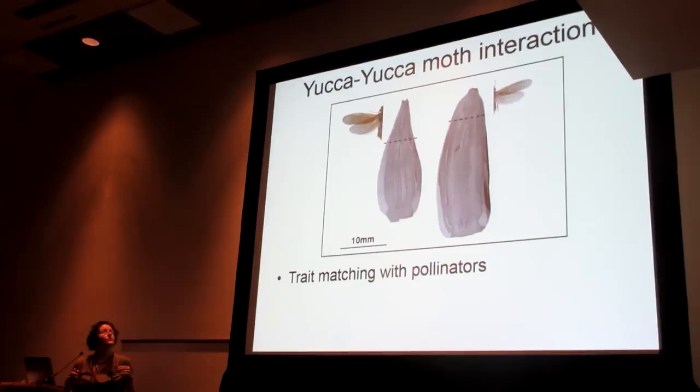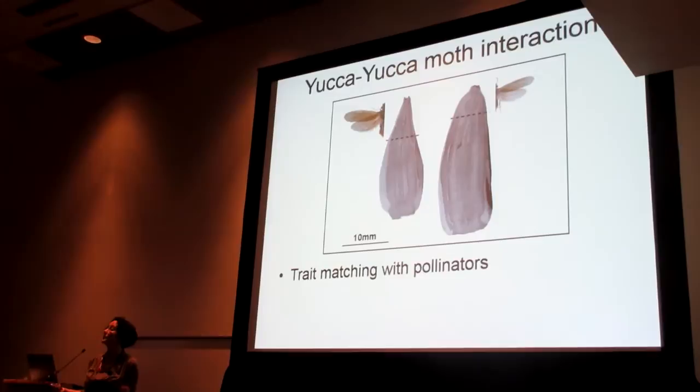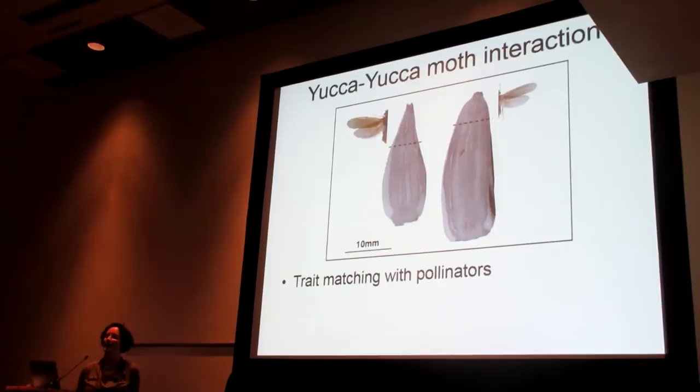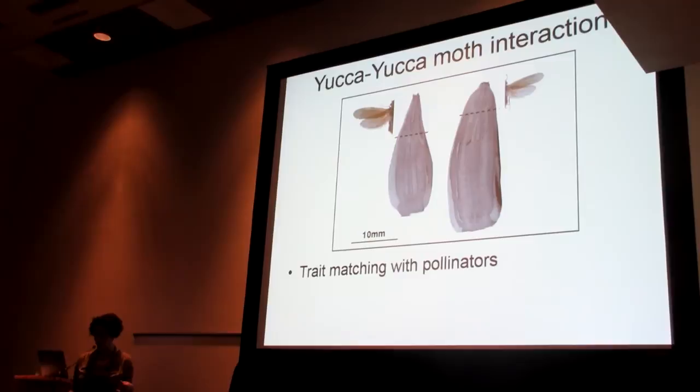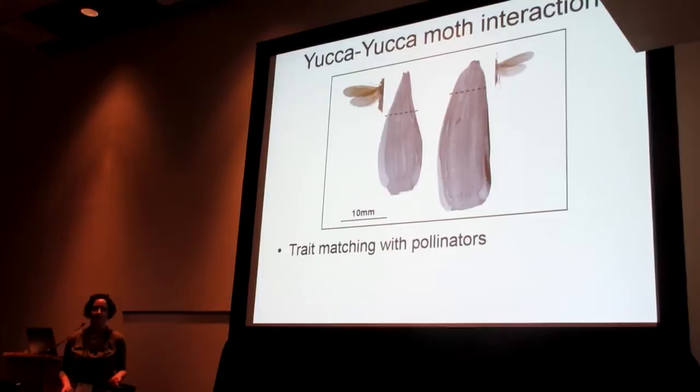The yucca moths that pollinate these Joshua trees are different — each species of tree has its own species of yucca moth. We have Tegeticula synthetica on the left and T. antithetica on the right. What you can clearly see is a strong correlation between the moth body size and the style length of the tree it pollinates. This is a pattern of trait matching that's typical of co-evolution.